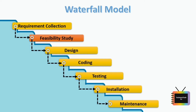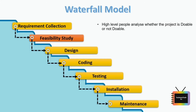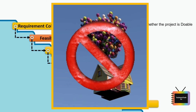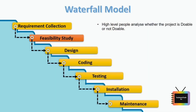The second stage of the waterfall model is a feasibility study. It is based on the requirements, where a set of high-level people like business analysts, HR, and architects analyze whether the project is doable or not. All requirements are gathered in the first stage, but in the second stage, the project's feasibility is checked — for example, building a house in the cloud like in the UP movie — that is not doable. So this feasibility stage is just to analyze whether the project is doable or not.